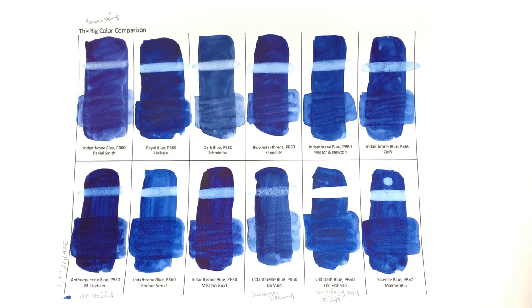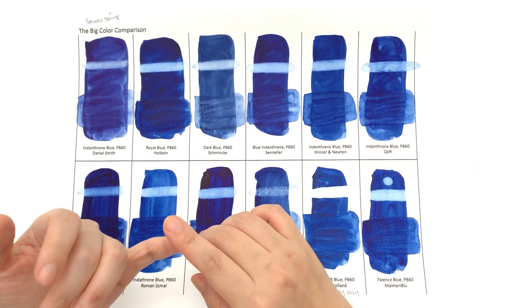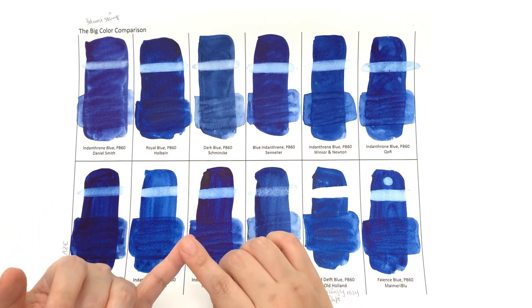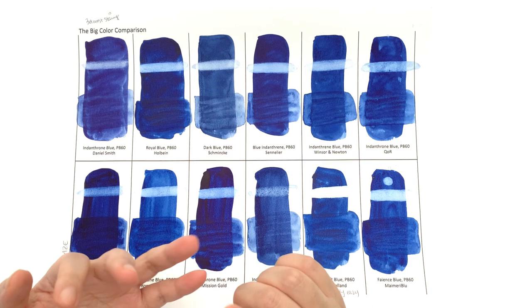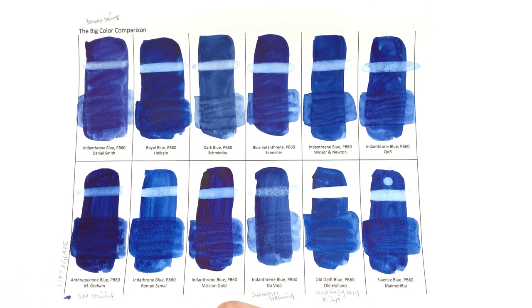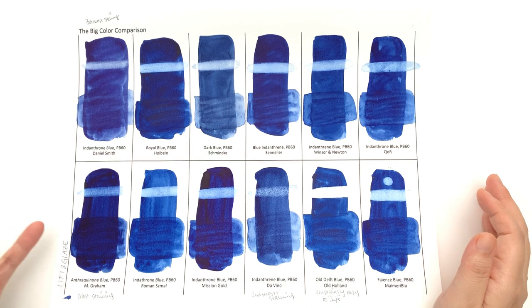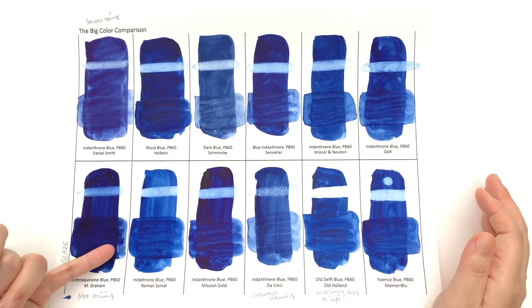In terms of glazing, you should be able to have an easier time glazing if you use a staining and transparent color, which Indanthrone Blue is. However, I am quite disappointed by some of these. Some are pretty good at glazing, such as the M. Graham one. I think it did a great job because you can see this bottom layer very clearly here and it's a pretty even square.